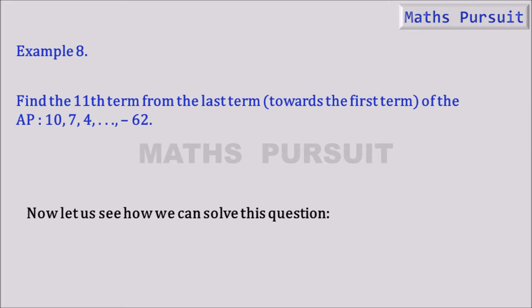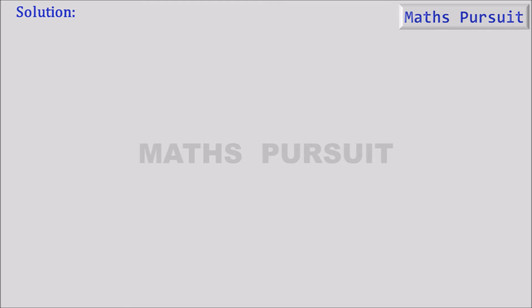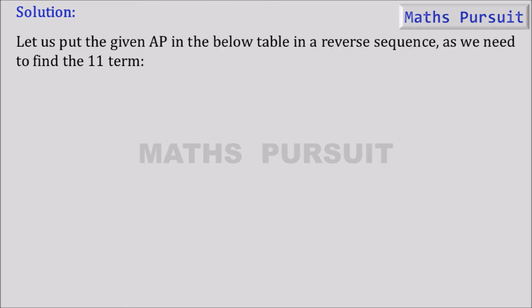Now let us see how we can solve this question. Moving on to the solution, let us put the given AP in the below table in a reverse sequence as we need to find the 11th term. As per the question, we need to find the 11th term from the reverse of the sequence.